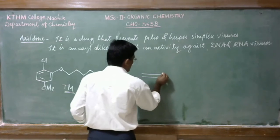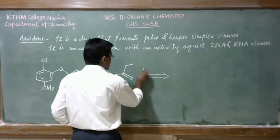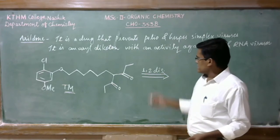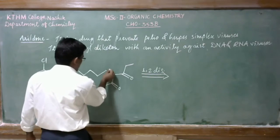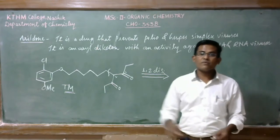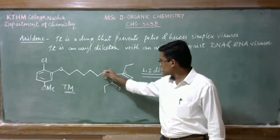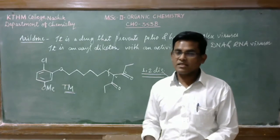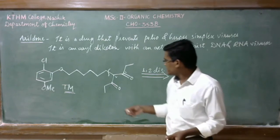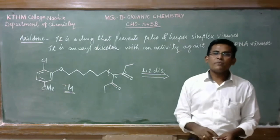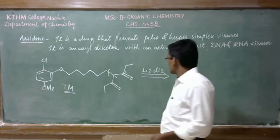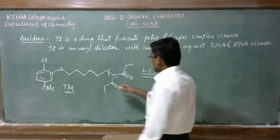When you carefully look at this molecule, we have this diketone moiety and the whole chain is an alkyl chain, which can be introduced by alkylation. This involves the enol chemistry, so we should go for this disconnection first. Let us put this retrosynthetic arrow and write this 1,2 disconnection. It is a 1,2 disconnection because this disconnection is two carbons away from this carbonyl carbon.